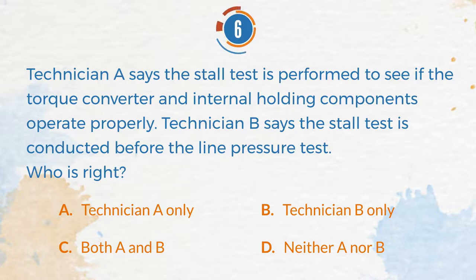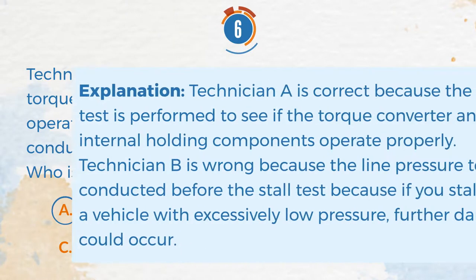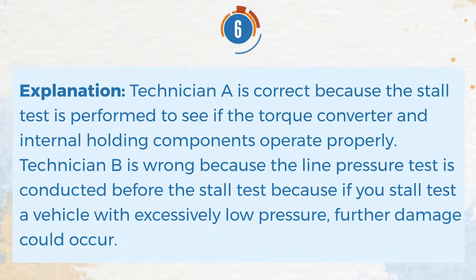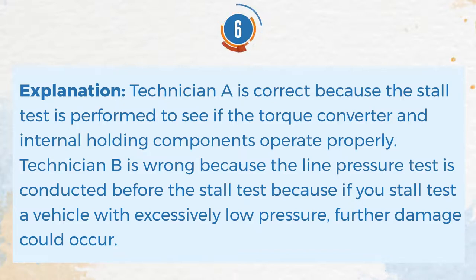The correct answer is A. Technician A only. Explanation: Technician A is correct because the stall test is performed to see if the torque converter and internal holding components operate properly. Technician B is wrong because the line pressure test is conducted before the stall test, because if you stall test a vehicle with excessively low pressure, further damage could occur.